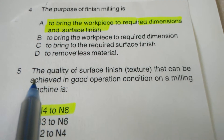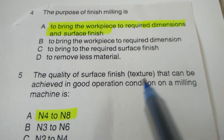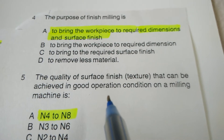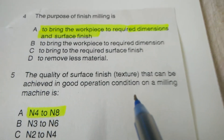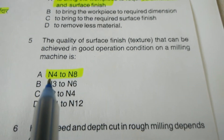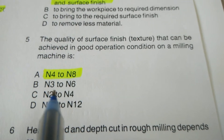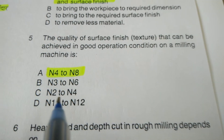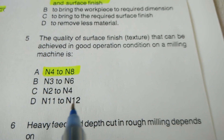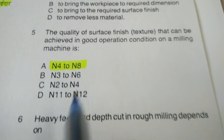Next objective: The quality of surface finish that can be achieved in good operating conditions on the milling machine — N4 to N8, N3 to N6, N2 to N4, or N11 to N12? The correct answer is N4 to N8.